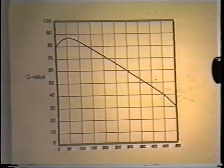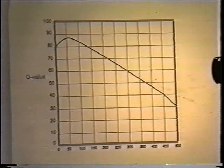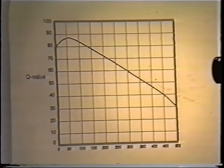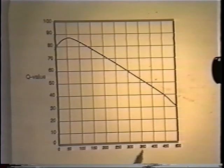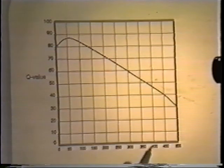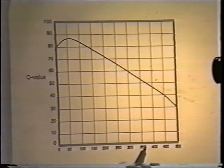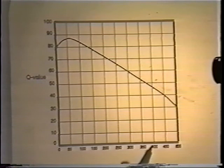Now that we found the total solids in milligrams per liter, we can go to chart nine, total solids, in our stat manual. When you get there, what you need to do is find 381 along the axis. Notice that the Q value chart is not really well divided up, so you're going to have to use some of your graphing skills.